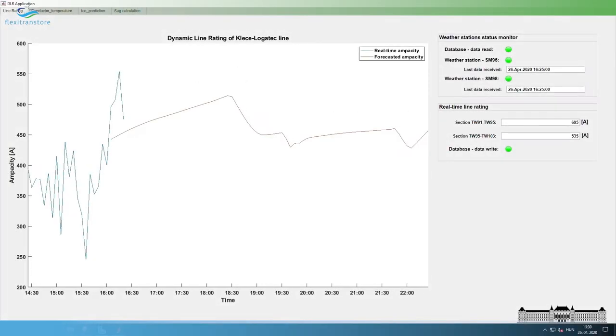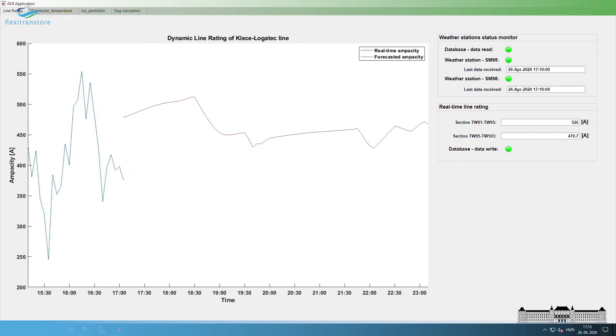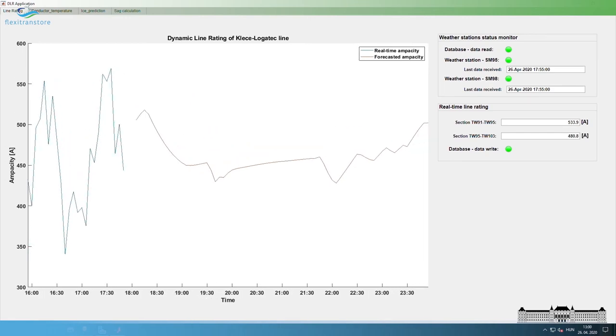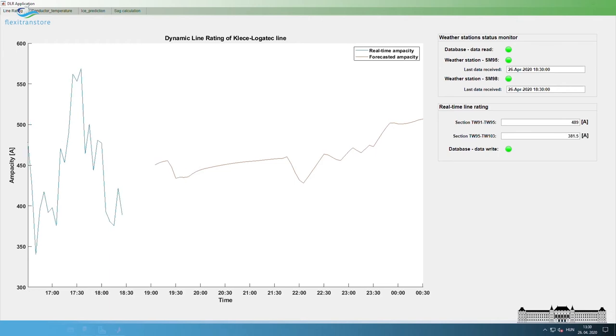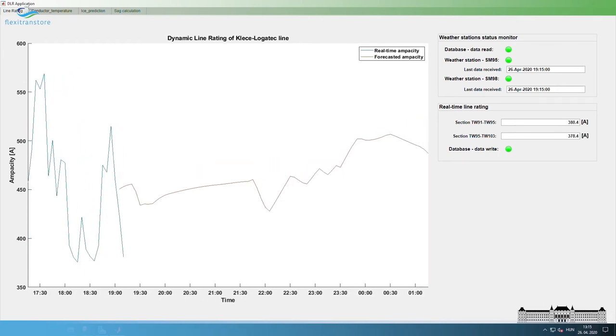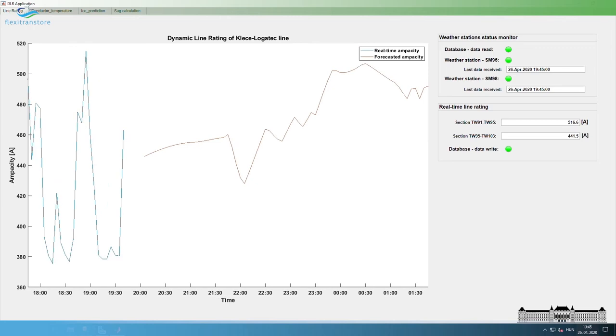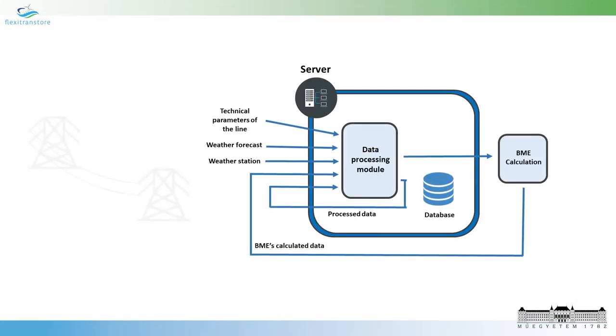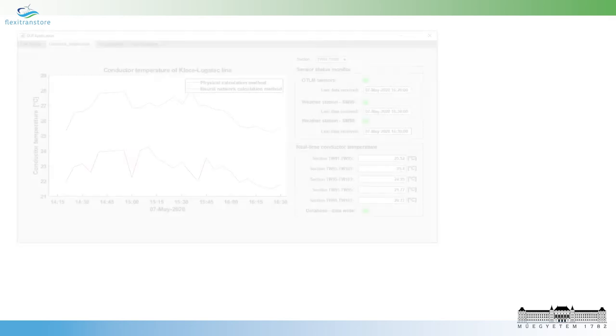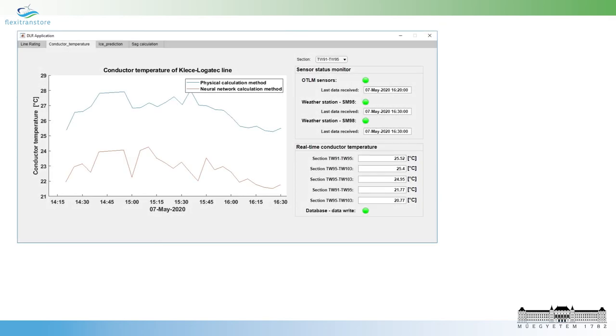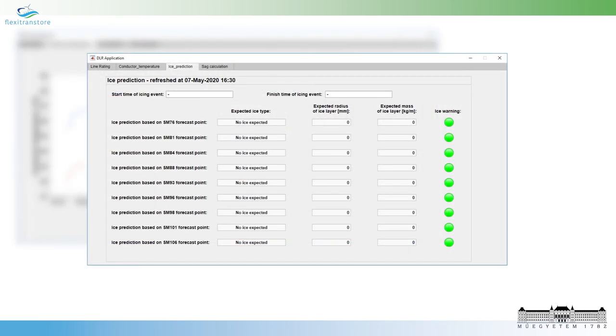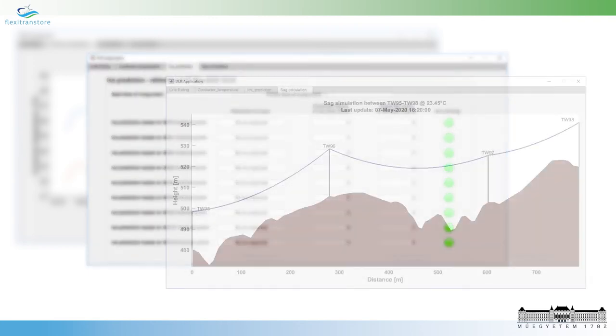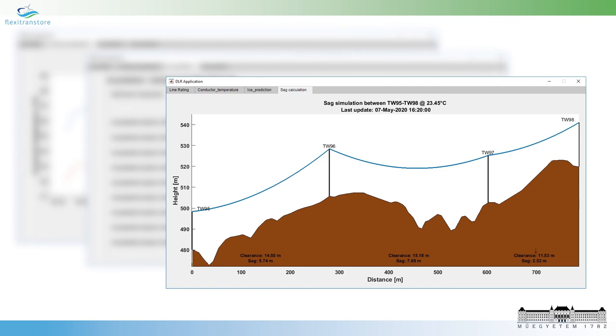The BME high voltage laboratory's DLR expert system was developed in order to monitor the actual thermal state of the conductors. For this purpose, the real-time and predetermined line ratings are calculated with an extended physical model. This model also takes the cooling effect of precipitation into account. The conductor temperature is also tracked by a neural network-based model. The ice prediction subsystem is developed in order to forecast possible icing events on power lines. For safe and high thermal utilization of the conductors, the SAG clearance calculation is also tracked by the grid management system.